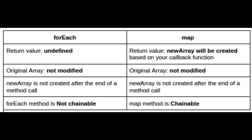So if you are planning to alter the array, you should use the map method since it doesn't change the original array and returns a new array. But if you don't need to return an array and just want to loop through all elements, you can use the forEach method or even a for loop.